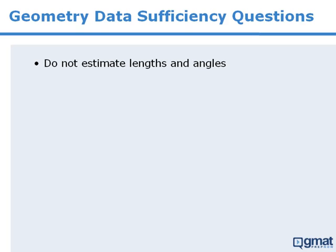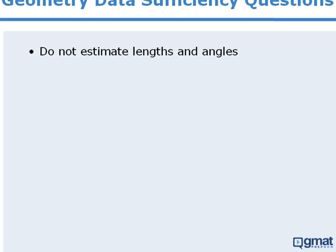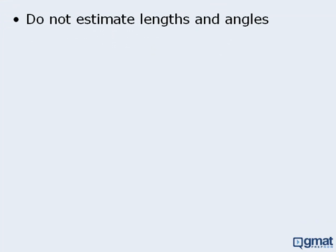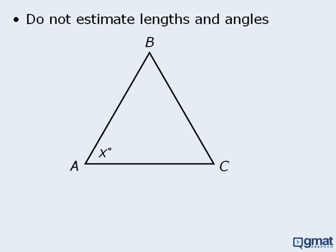The first tip is: do not estimate lengths and angles. The figures in data sufficiency questions are often intentionally drawn out of scale to mislead test takers. For example, in this figure, we cannot draw any conclusions about any of the angles or lengths of the sides. Although this certainly appears to be an equilateral triangle, it could very well be a right triangle. To solve a geometry question, we must apply the formulas and rules related to the figures at hand.